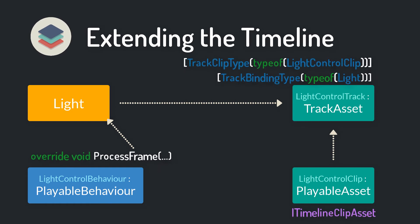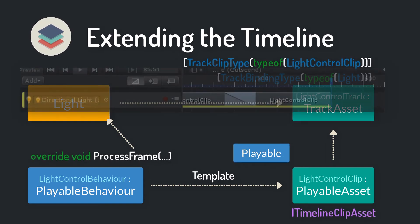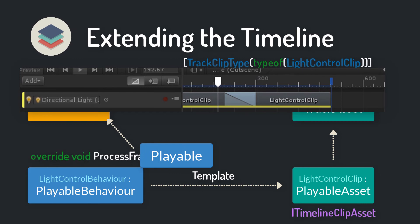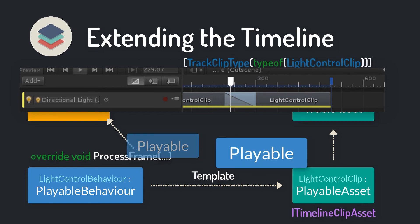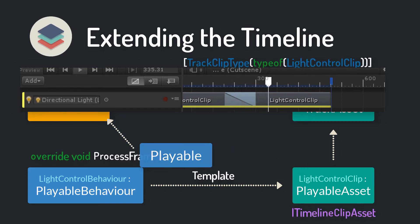The behavior script only acts as a template for the clip script. During preview mode in the editor or during runtime when the timeline is played, the clip generates playable objects based on that template. Those generated objects are then processed in the ProcessFrame method.